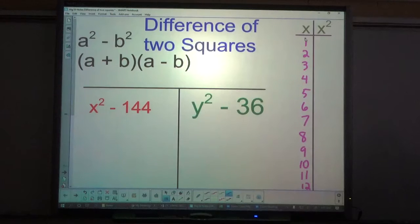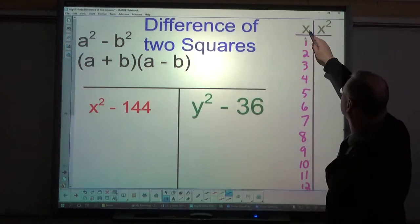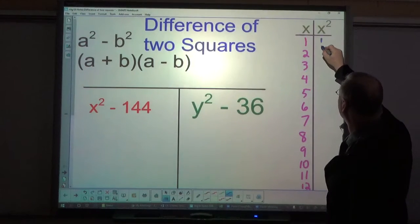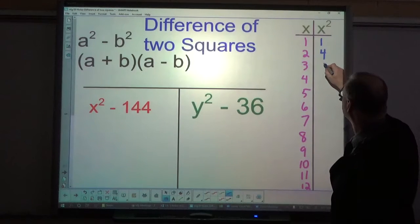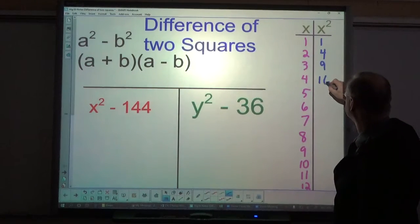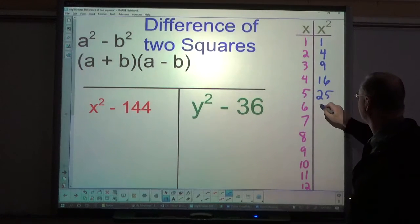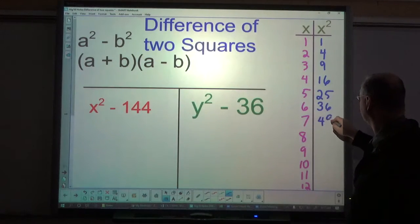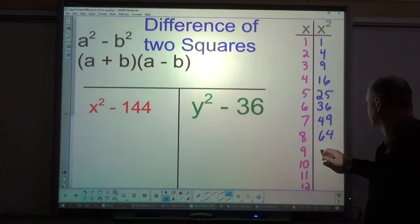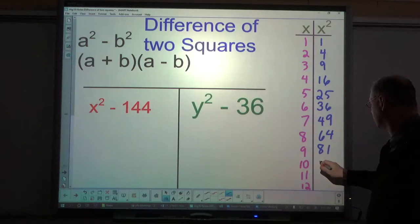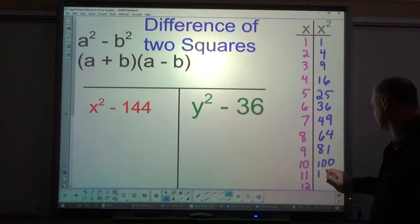Now you want perfect squares, so you square this number. X times x squared: 1, 4, 9, 16, 25, 36, 49, 64, 81, 100, 121, and 144.